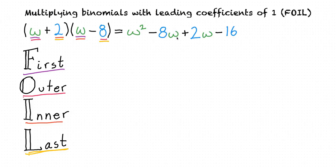Now we can simplify it a little bit further by combining our minus eight w and our plus two w, because these are like terms. They both have a w with no exponent. And this gives us a final answer of w squared minus six w minus sixteen.